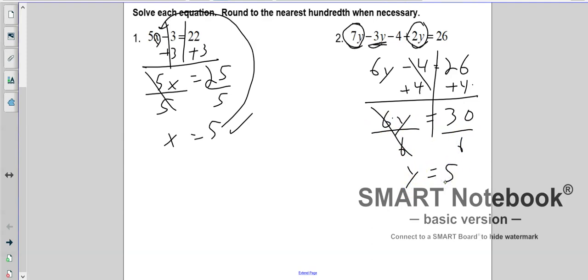Again, which would be a little bit more work, but I could plug it in here and get 35 minus 15, which is 20. 20 minus 4 is 16, plus 2 times 5 is 10. 16 plus 10 is 26. Check.